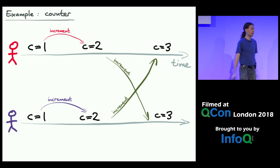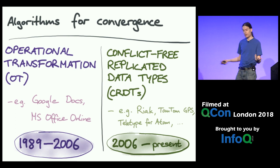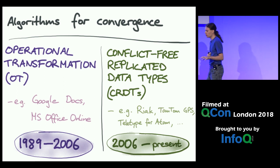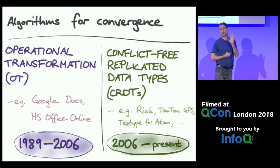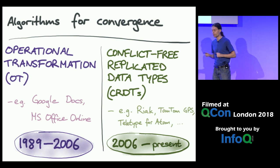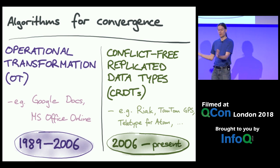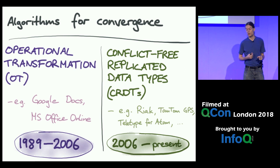This problem of people editing simultaneously and having to merge has been studied for a long time. At a high level, two families of algorithms were developed. One is operational transformation, studied by academics since the late 80s, which is actually the foundation of Google Docs. However, due to some problems, people got frustrated with OT in the early 2000s and started a separate direction called conflict-free replicated data types, or CRDTs for short. CRDTs have been the focus of our research.